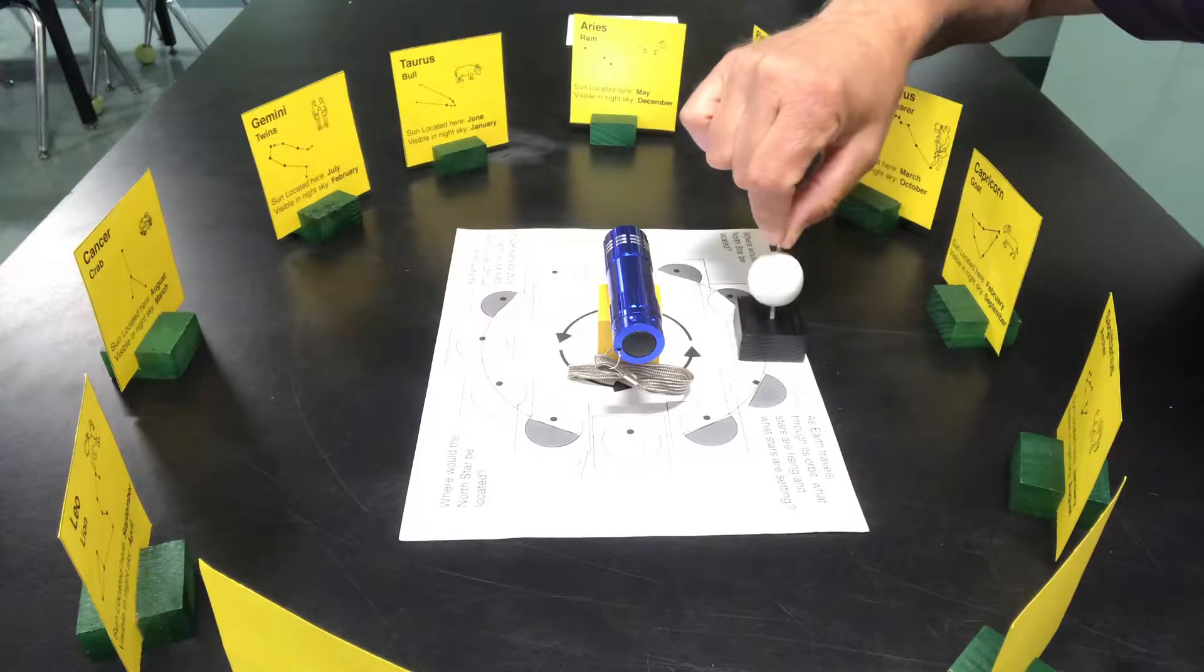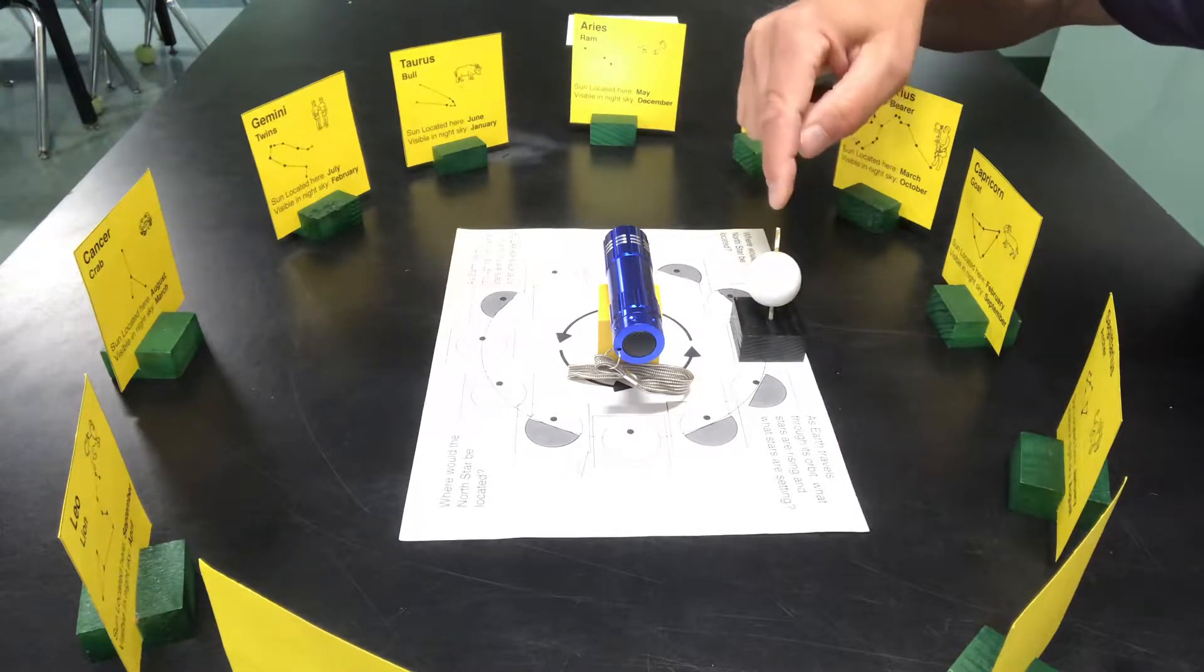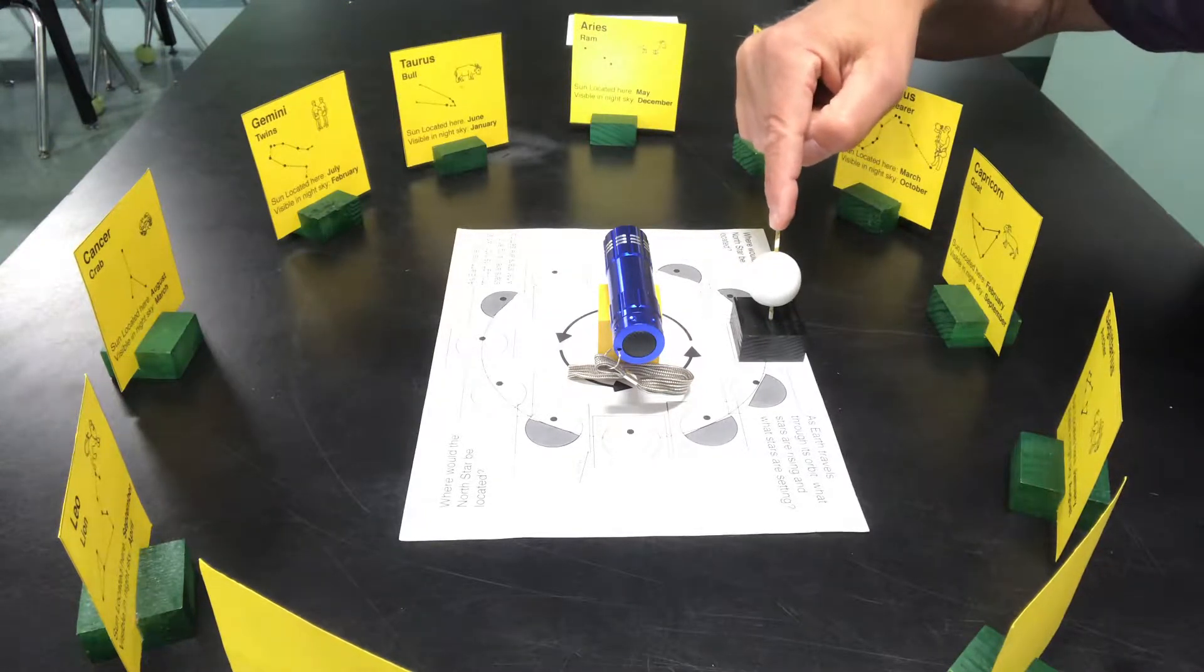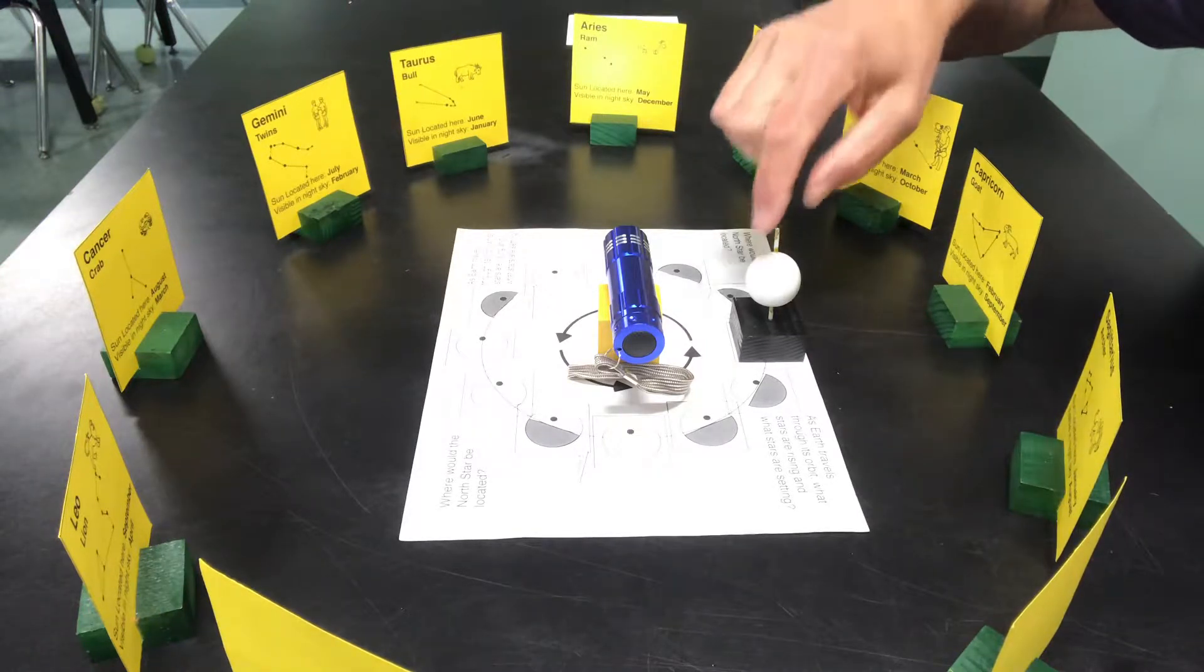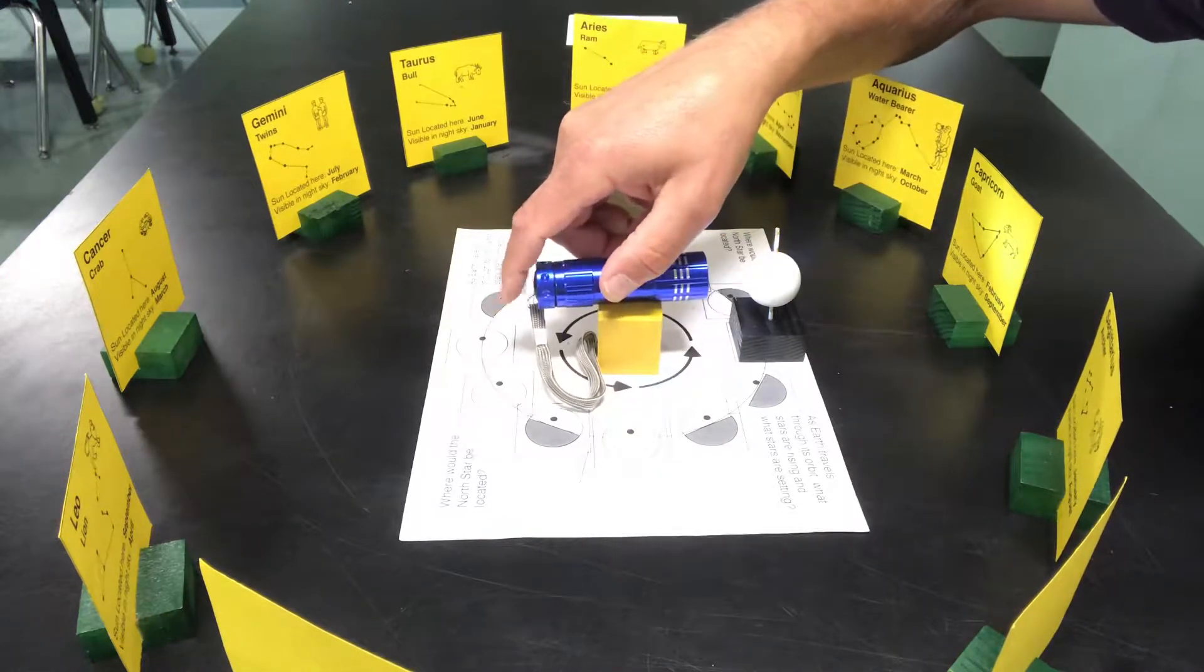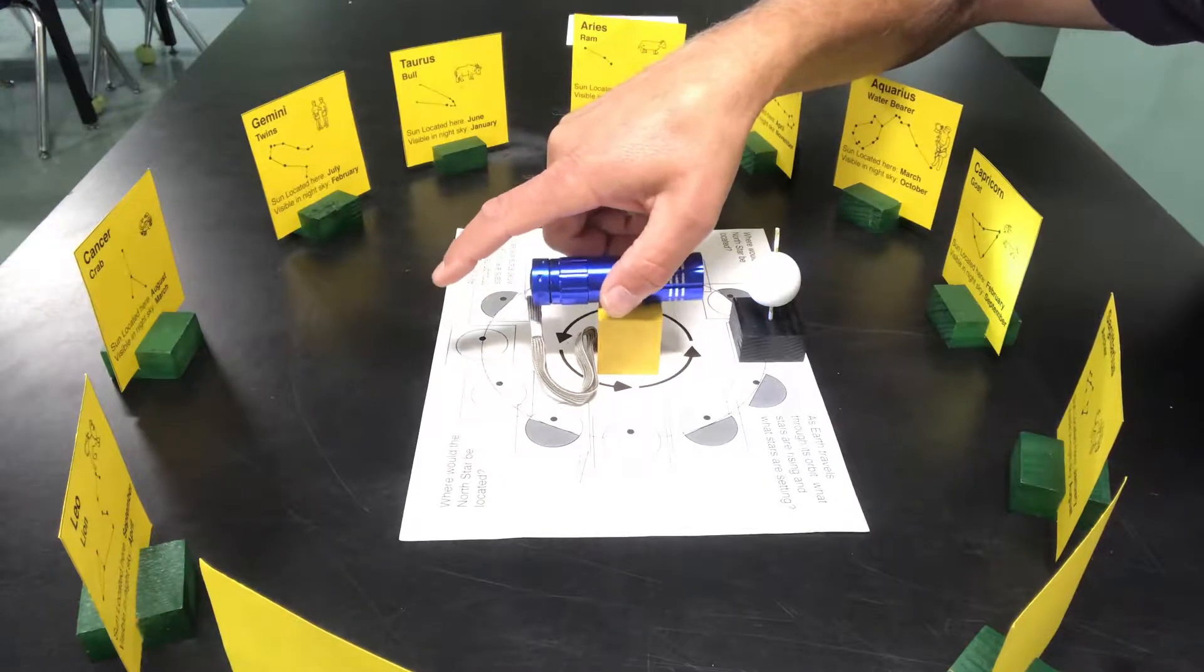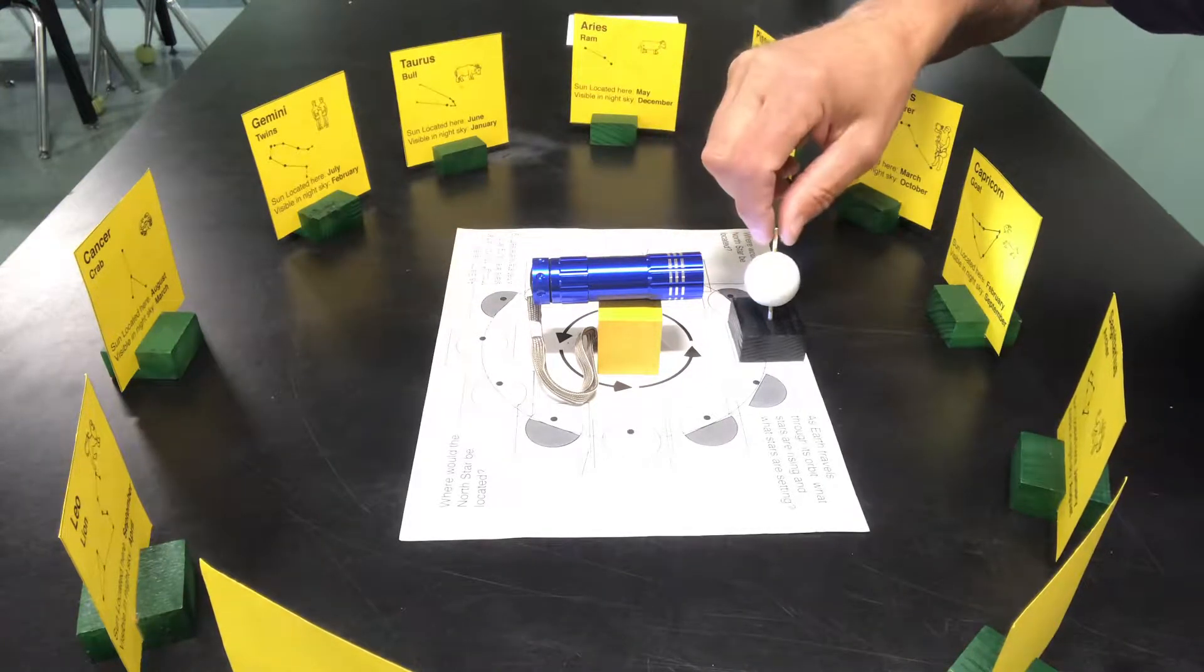And then as it moves around, so in September, at the autumnal equinox, it's not tilted toward or away from the sun. In fact, when the light shines here, it shines equally on both the Northern and Southern Hemispheres.